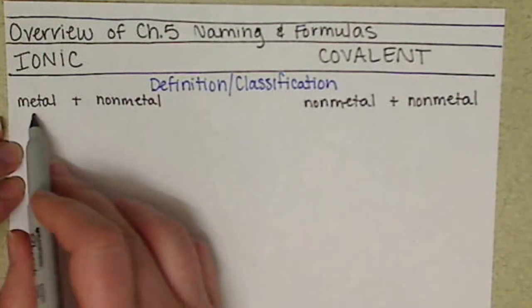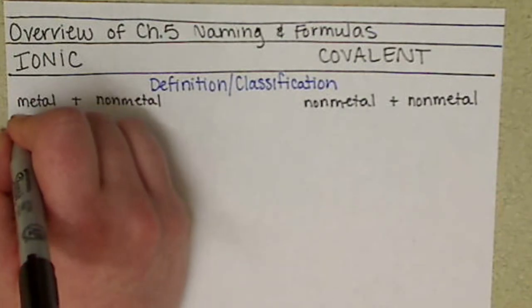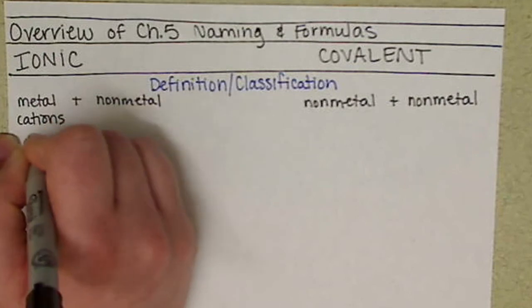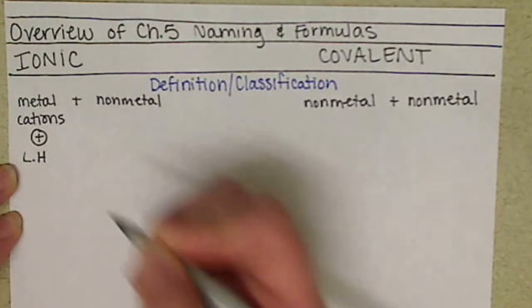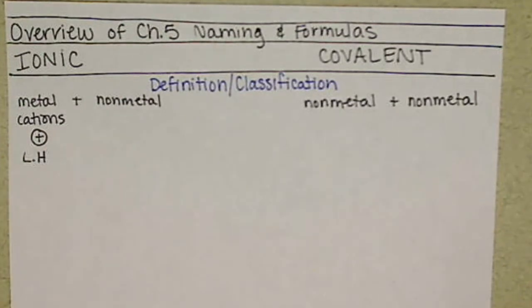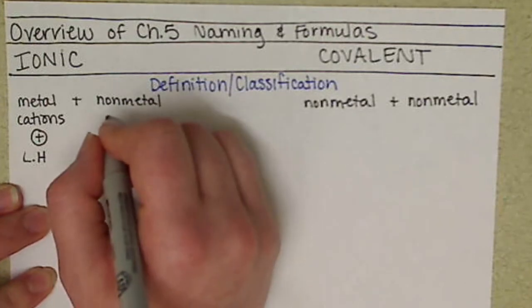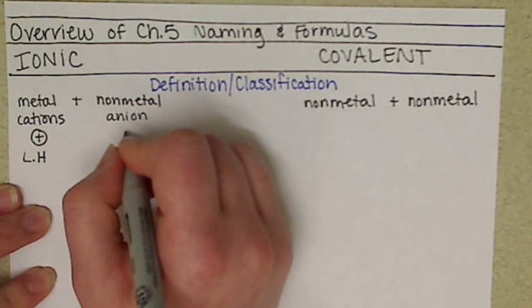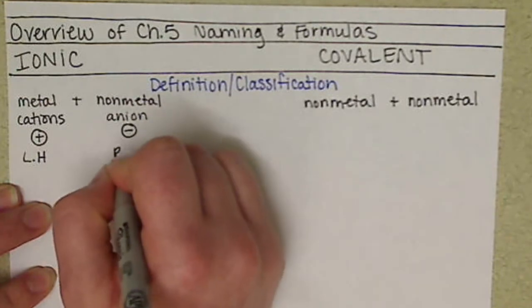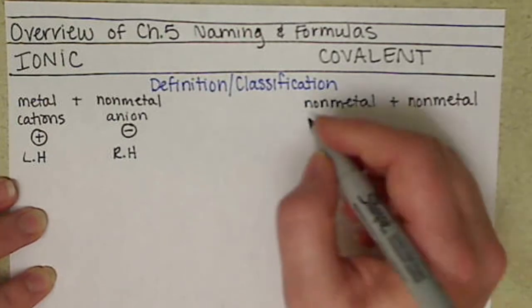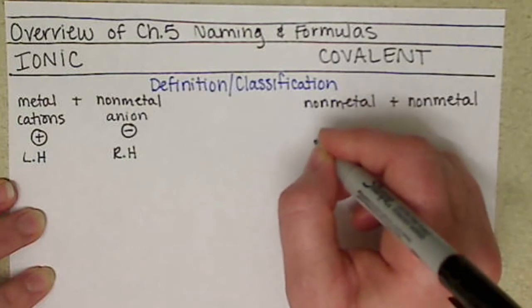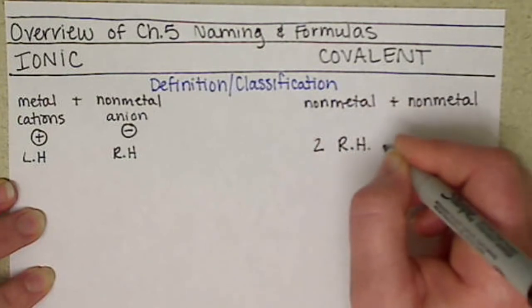Other ways to classify metal versus nonmetal: metals are your cations, or positively charged species, the elements on the left-hand side of the periodic table, left of the jagged line. Nonmetals are your anions, negatively charged, from the right-hand side. For covalent bonds, you're looking at basically two elements from the right-hand side.